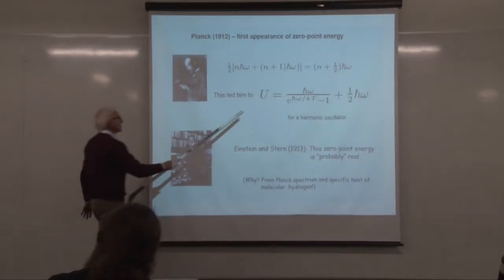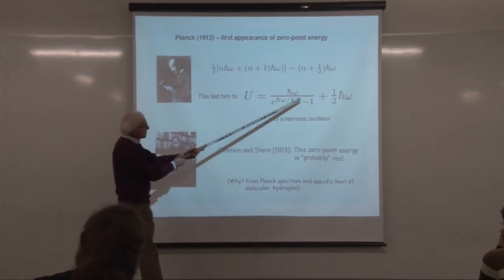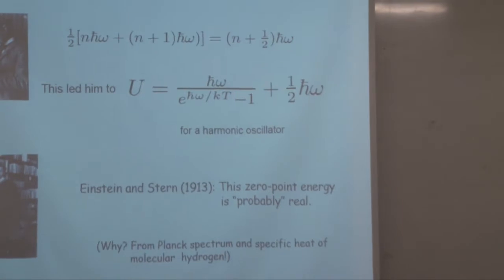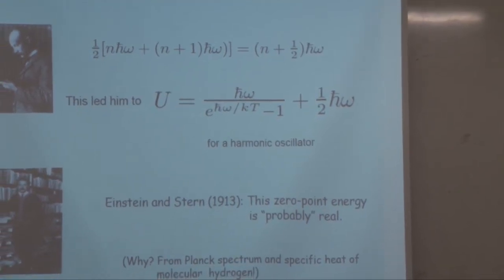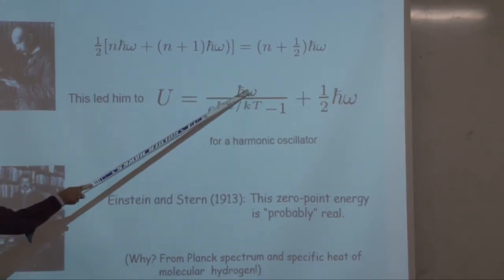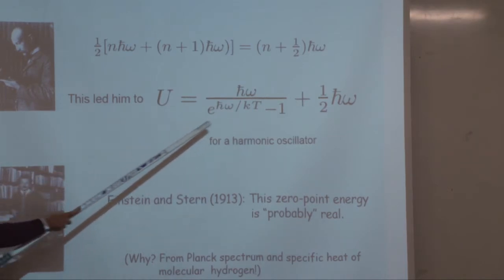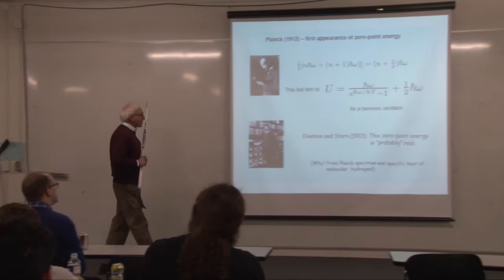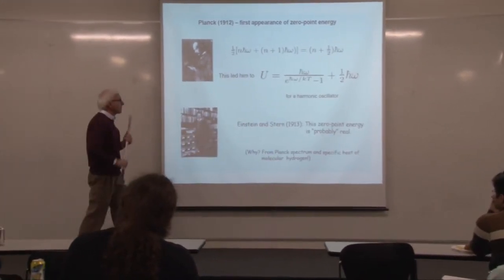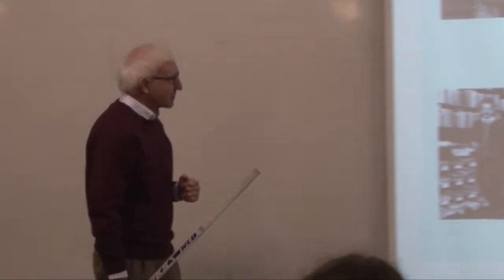Planck wound up with the expression for average energy of a harmonic oscillator at frequency ω and temperature T, including the zero-point term. If you expand at high temperature, you need that term to recover kT to lowest order in h-bar. Einstein and Stern, in 1913, concluded zero-point energy was probably real based on two things: the Planck spectrum, and the specific heat of molecular hydrogen.